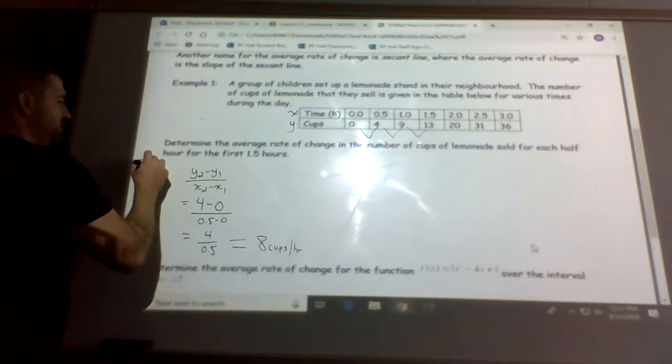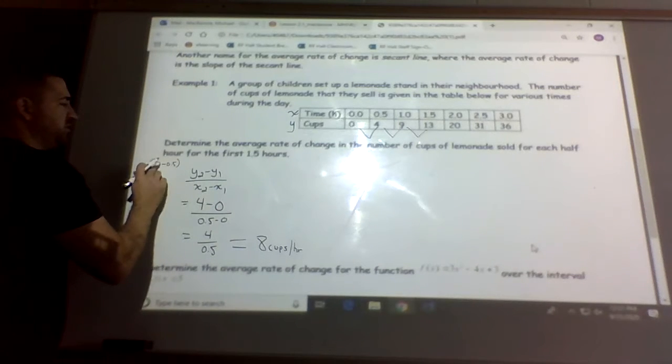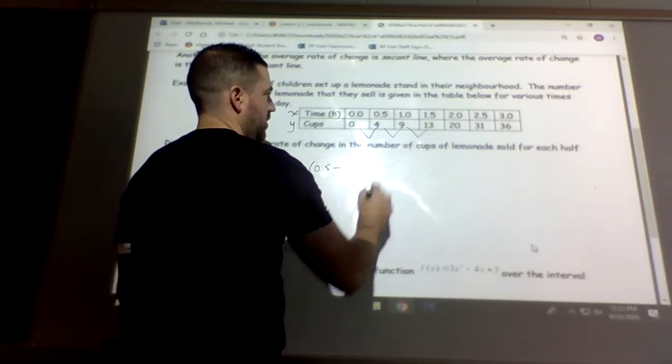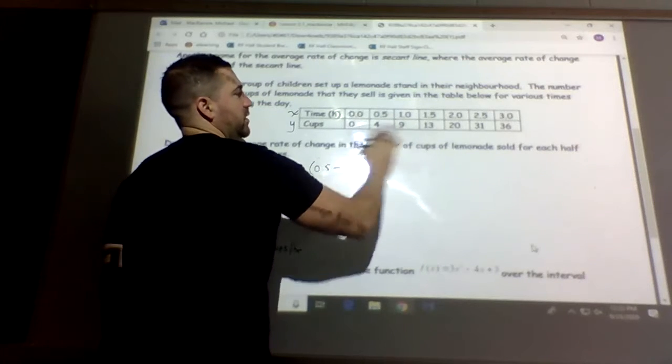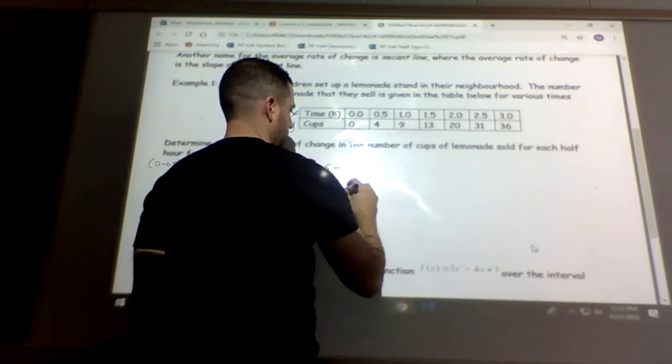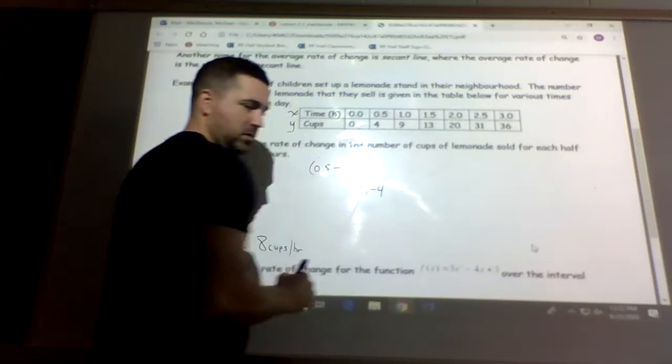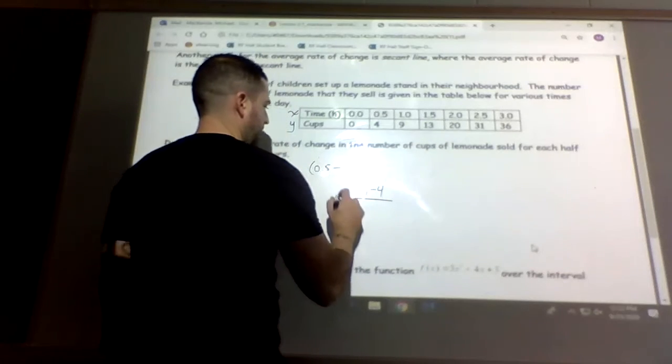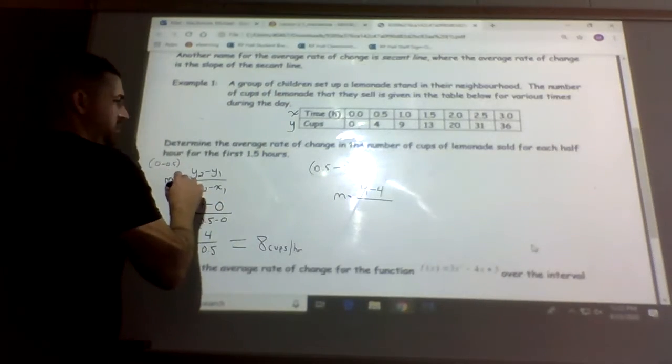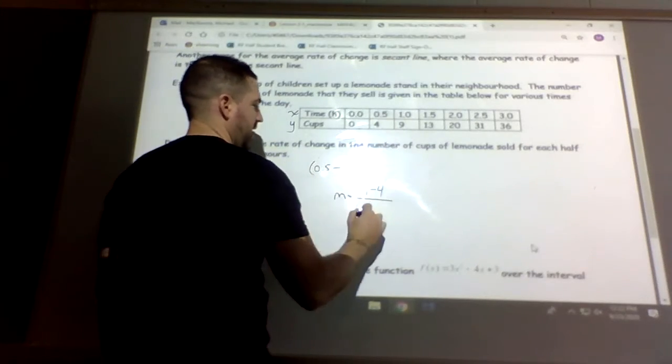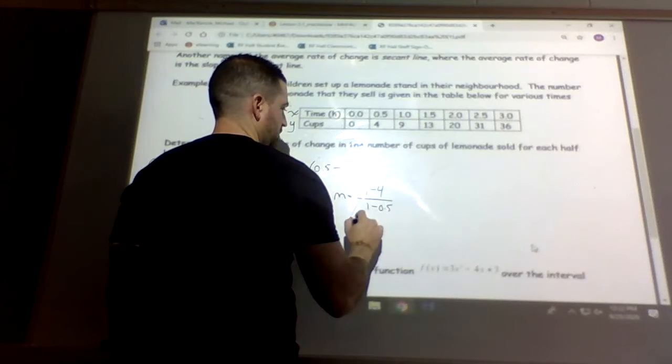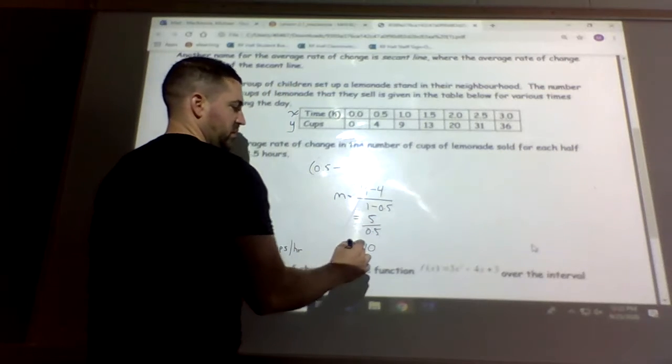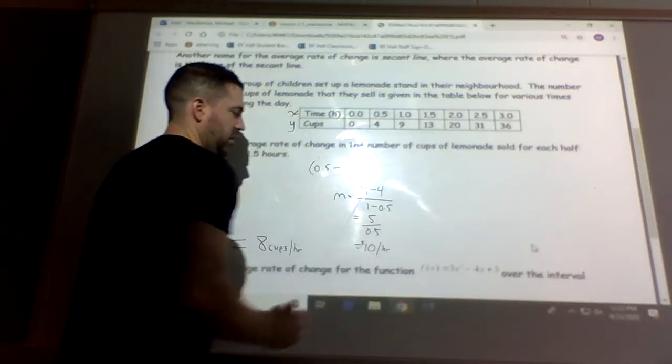Even though we did it first half hour, so it's 4 in the first half hour, which would be equivalent to 8 in an hour. So that's the first one, from 0 to one half. Now we're going to do from one half to 1 hour. So we have y2 minus y1, so 9 minus 4. So 9, I'm just going to put it as m for now. So 9 minus 4, and then we have 1 minus 1 half. So we have 5 divided by 1 half, which is 10.